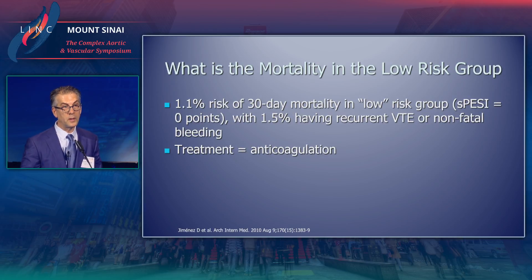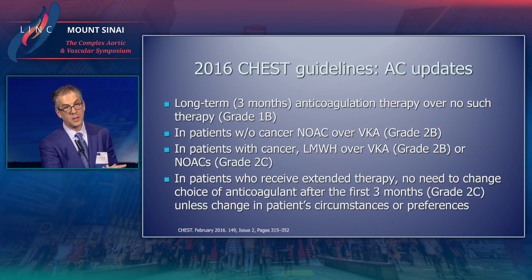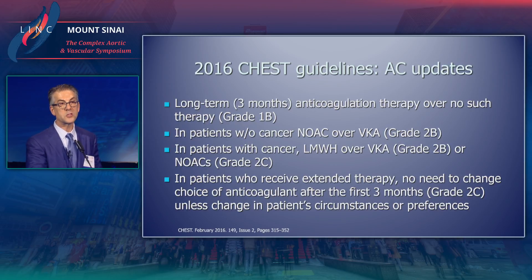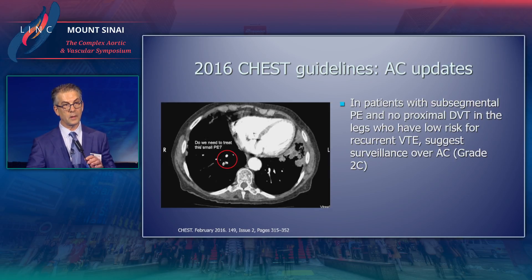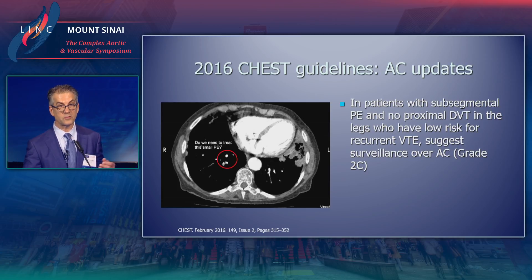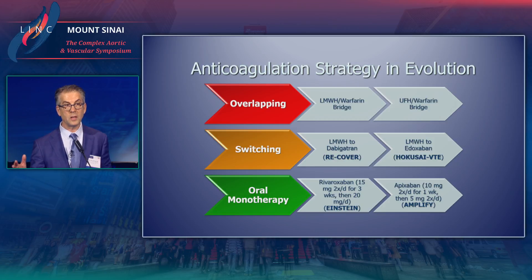In the low-risk group, there is basically a 1.1% risk of 30-day mortality, so these patients are treated with anticoagulation alone. Most patients are treated for three months. In patients without cancer, NOACs are preferred over vitamin K antagonists like warfarin. In patients with cancer, low-molecular-weight heparin is now preferred over VKAs or NOACs. For small subsegmental PEs with no proximal DVT and a very low incidence for recurrent VTE, guidelines suggest surveillance over treatment. There has been evolution in anticoagulation, with much more use of oral NOACs nowadays.